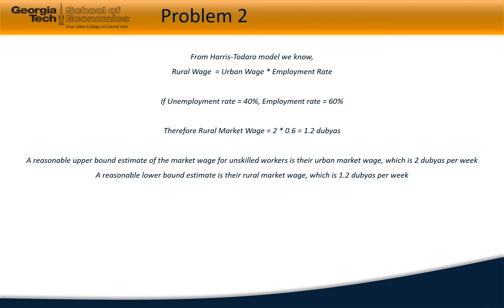Problem two asks us to estimate the rural wage and the workers' lower and upper bound market wage. From the Harris-Todaro model, we know the rural wage is equal to the urban wage times the employment rate. We are given a 40 percent unemployment rate, which equates to a 60 percent employment rate.